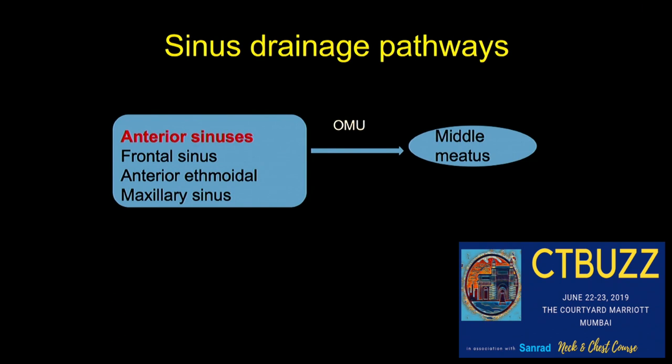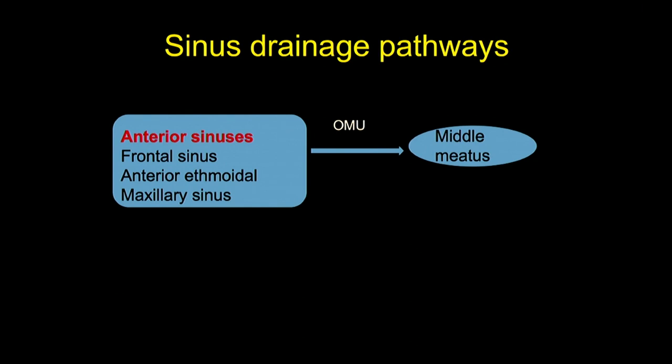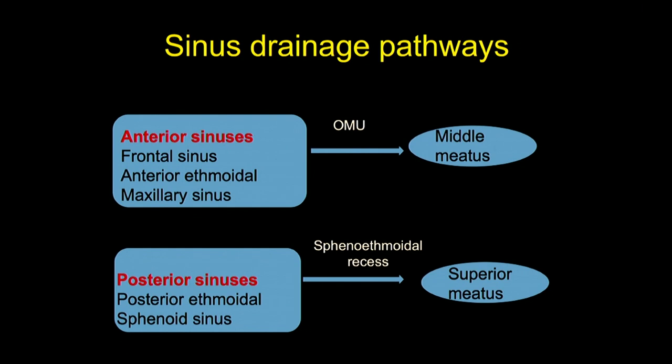The sinuses are divided into anterior and posterior groups. Anterior sinuses include the frontal sinus, the anteroethmoidal, and the maxillary sinus, which drain via the osteomeatal unit into the middle meatus. Posterior sinuses are the posterior ethmoidal and the sphenoid sinus, which drain via the sphenoethmoidal recess into the superior meatus.